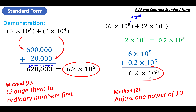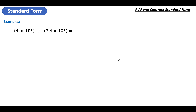6.2 times ten to the power of five — same answer, same question. Here's another example. First, look for the one with the larger number. So I'm going to change my four times ten to the power of five up to something to the power of six so the powers of ten match. The power got one bigger, which means my number gets one smaller. Then I'm going to add 0.4 times ten to the power of six to 2.4 times ten to the power of six.